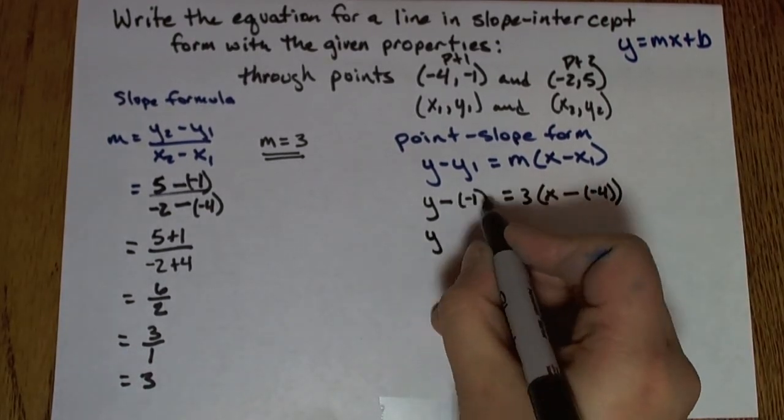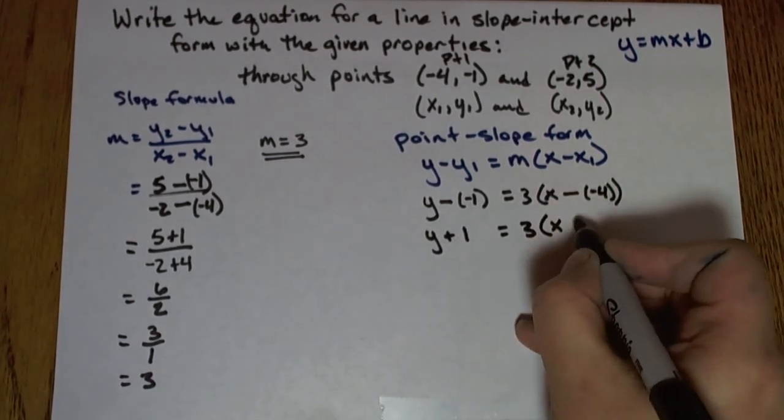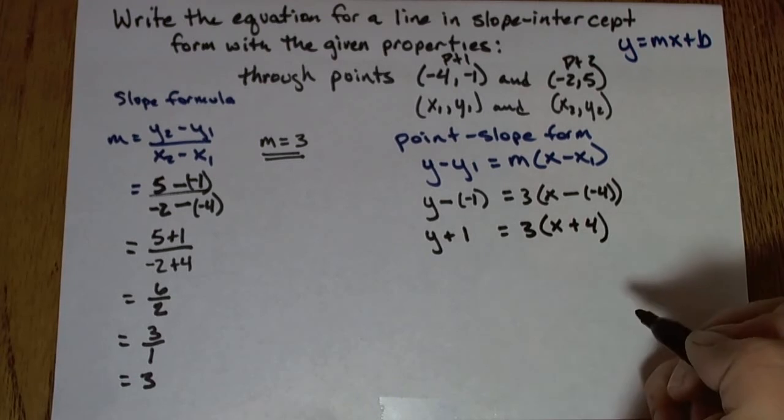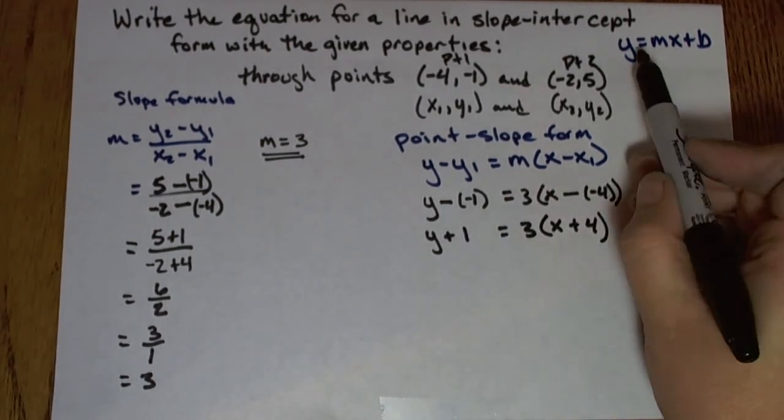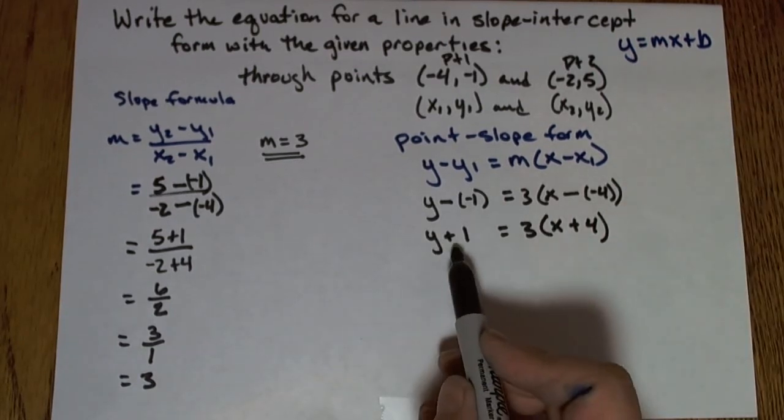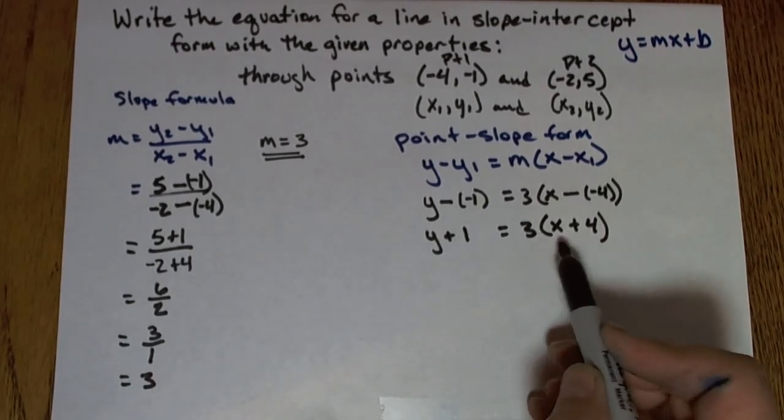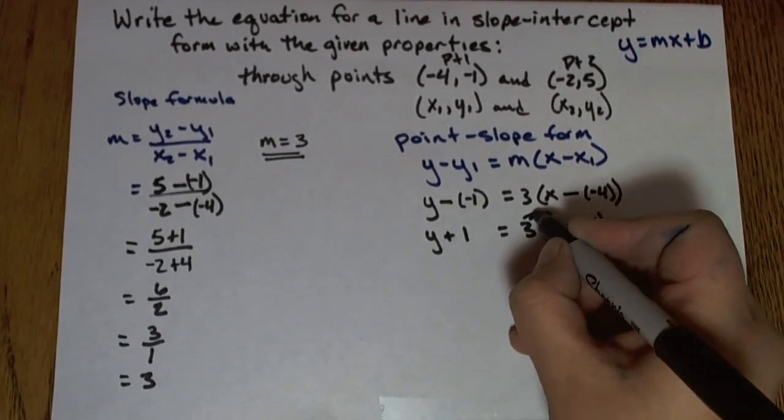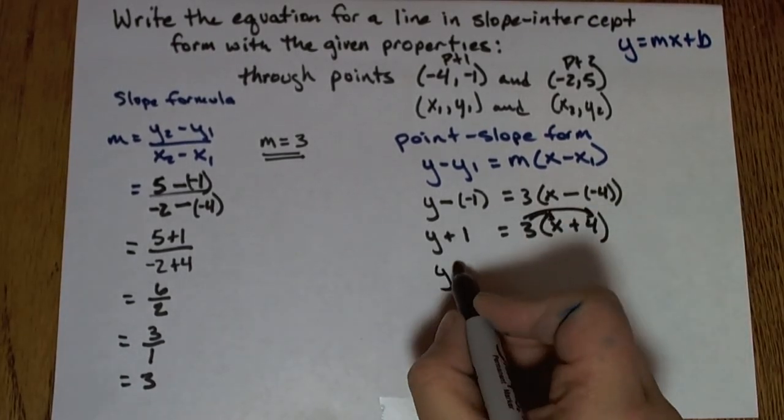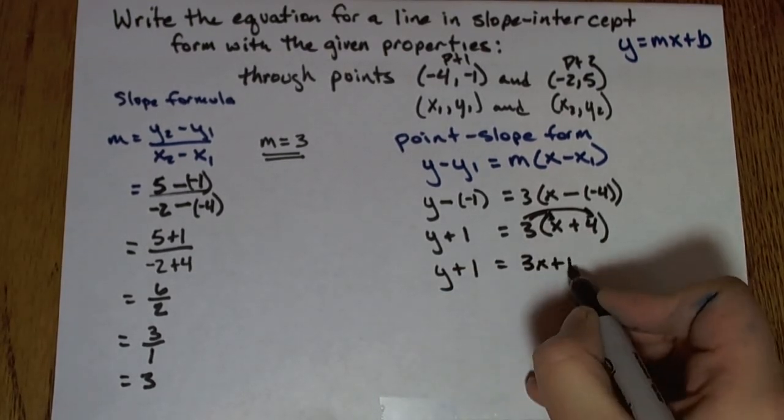So again, when I have minus a negative, I always like to take the time to make that change to plus. And my goal is to get the form y equals mx plus b, so to isolate y. And right now I have y plus 1, so I'm going to be getting rid of that. But first on this side, I have some simplifications. So first I will simplify the right-hand side. y plus 1 equals 3x plus 3 times 4 is 12.